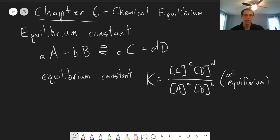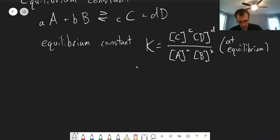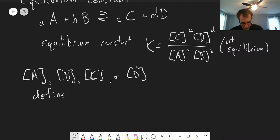And one thing that I'll just note about this is these concentrations A, B, C, and D have to be defined relative to standard states. So number one, these are at equilibrium and defined relative to a standard state. So what that means in practice is we have to use a particular set of units, depending on what phase these things are in.